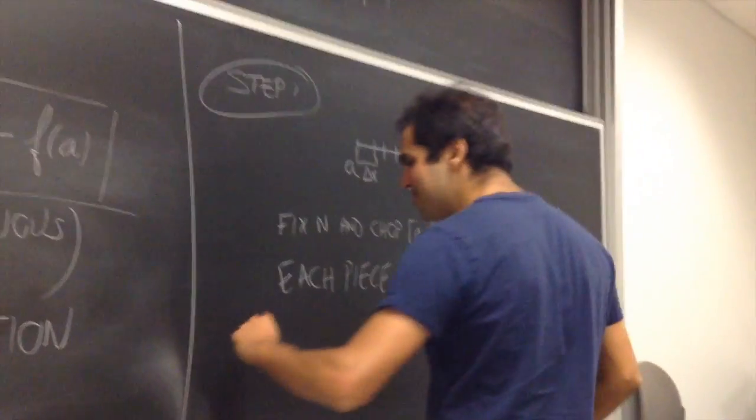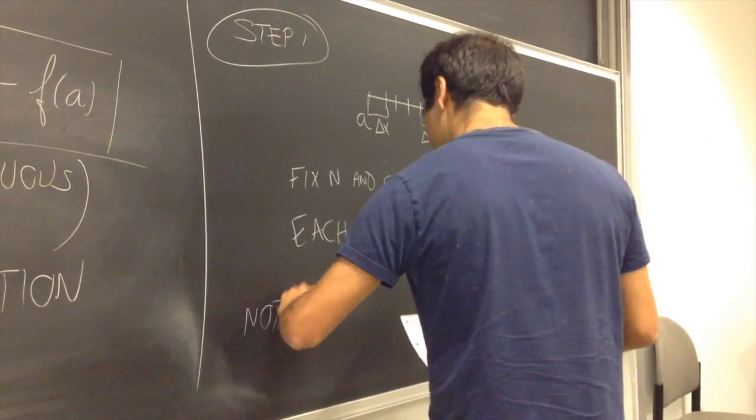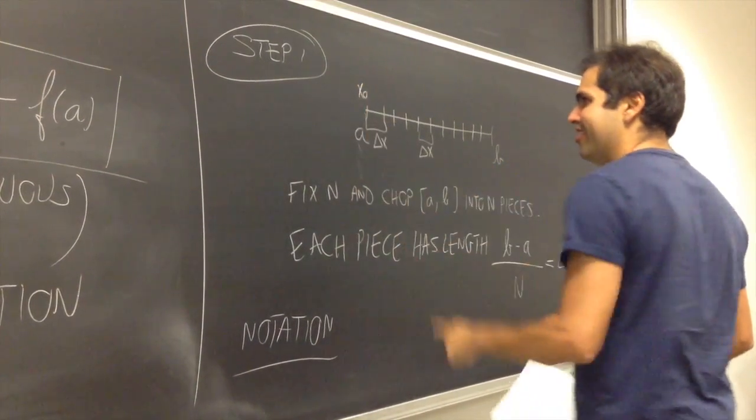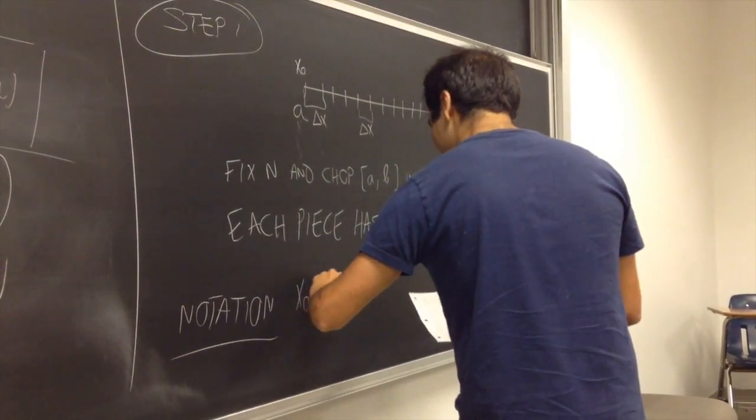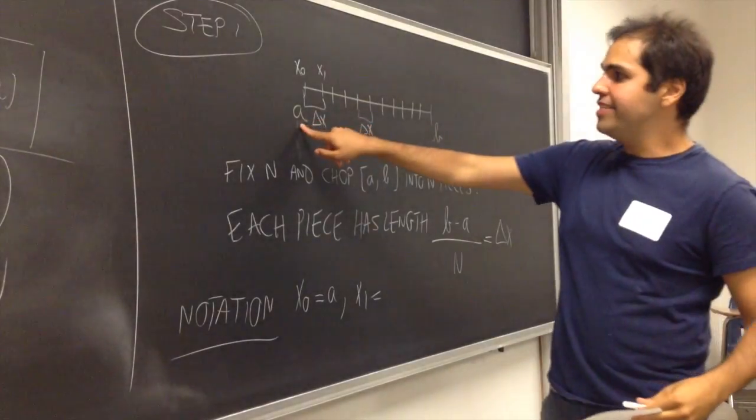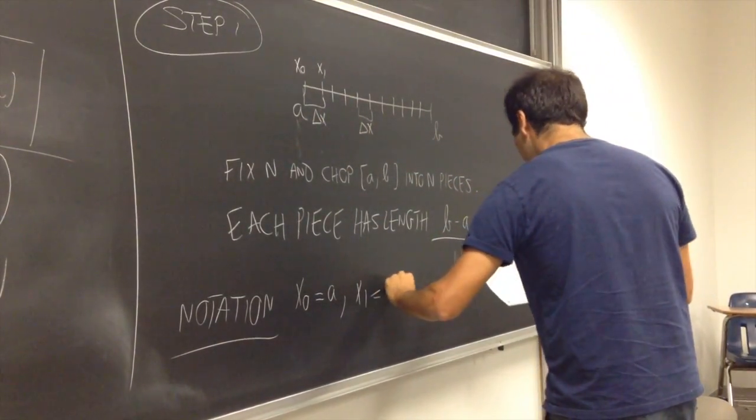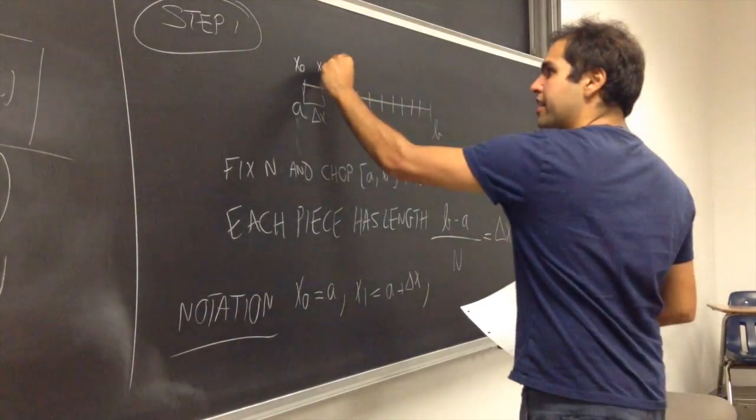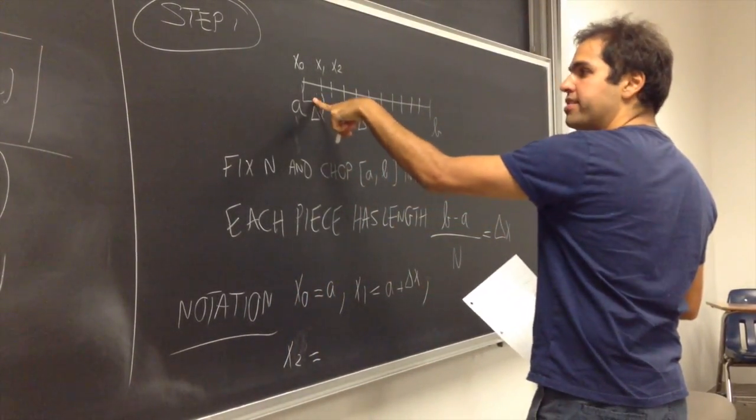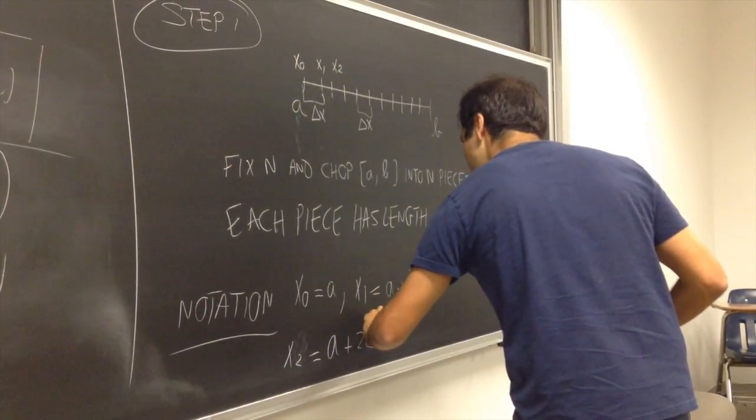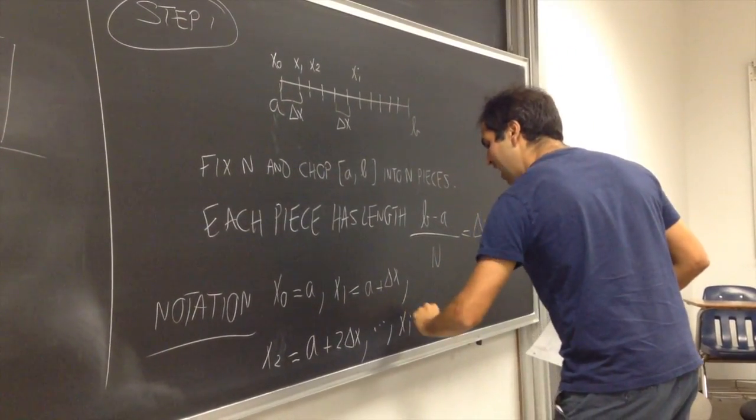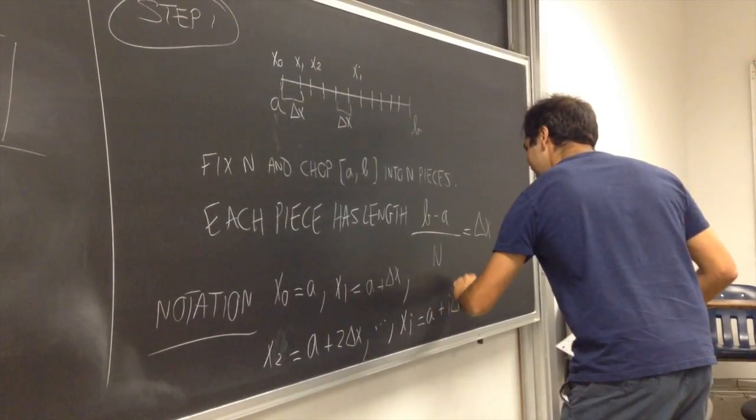So each piece has length, called the total length of the interval b minus a, but divided by n, because you're splitting it up into n pieces. And we'll call this delta x, like a small change in x. Here you have one piece of length delta x. And then here you have another piece of length delta x, et cetera. First of all, the first point A, we call this x naught. x naught is A. And then the next point, we call it x1. And what is x1? It's A plus this little piece. So A plus delta x. The next point, we call it x2. What is it? So A plus delta x plus delta x. So A plus 2 delta x, et cetera. The i-th point will be xi is A plus i delta x.